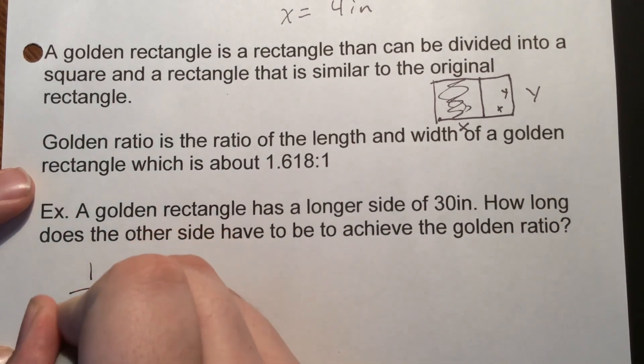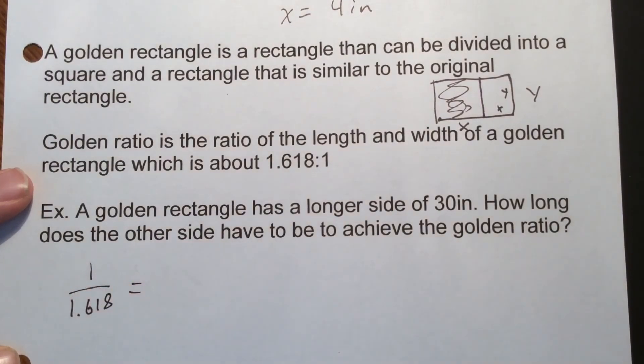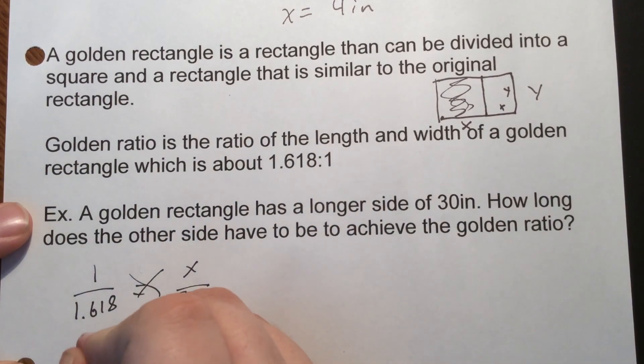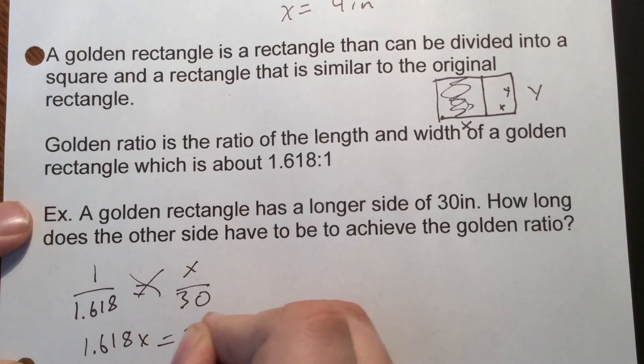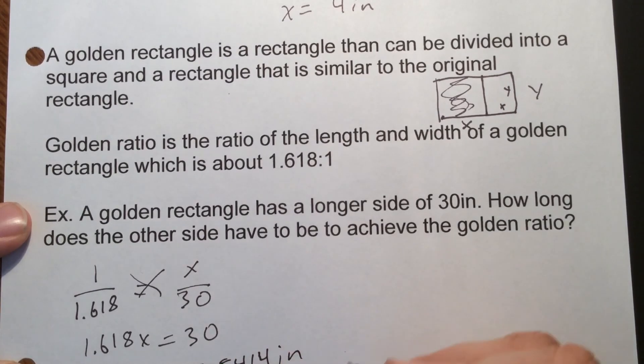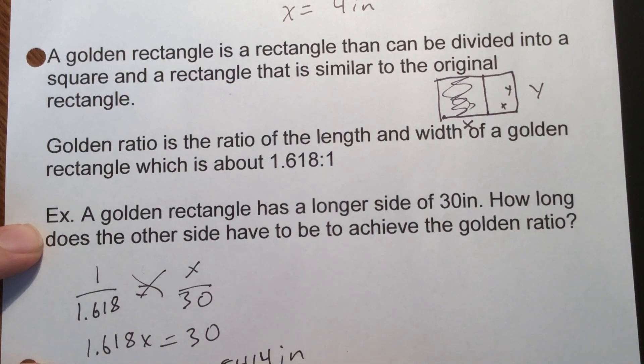So we're always going to set that up 1 over 1.618. So a golden rectangle has a longer side of 30 inches. How long does the other side have to be to achieve that golden ratio? So golden rectangle, longer side of 30. So our 30 would go here with a longer side because 1.618 bigger than 1. That's how we're comparing them. So we put that one there. If it would have said it's the smaller side we put it on top, longer side we put on the bottom with the 1.618. Cross multiply and solve. 1.618 X equaling 30. So X would then equal 15.5414 inches to be exact. So in other words X is about 15.5 inches.